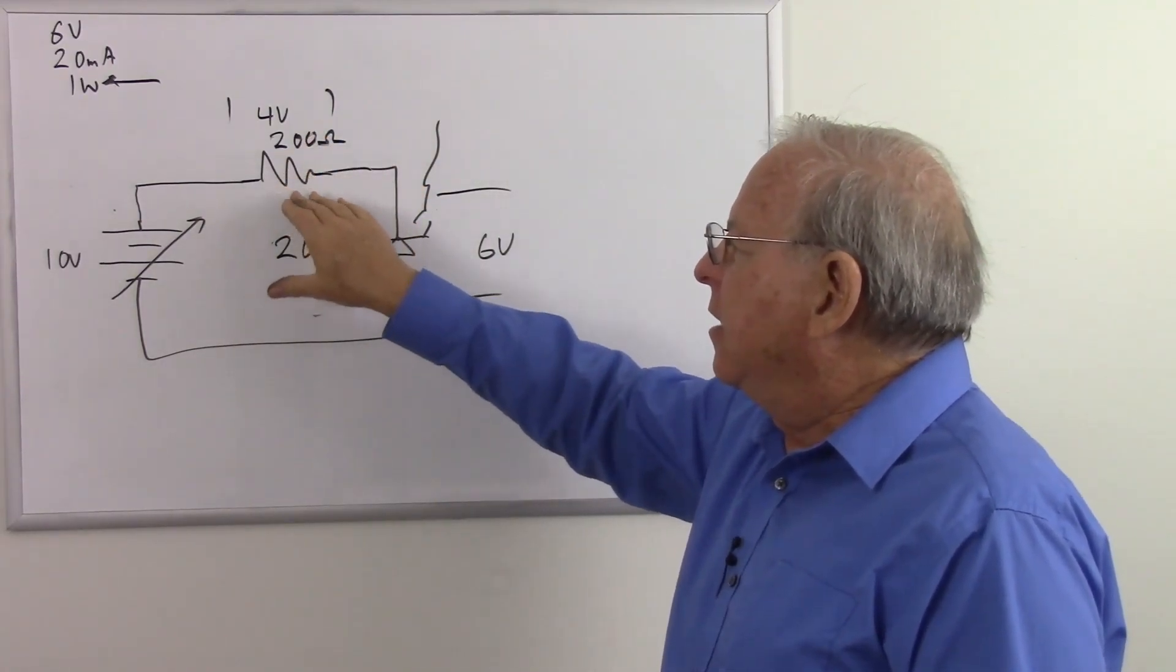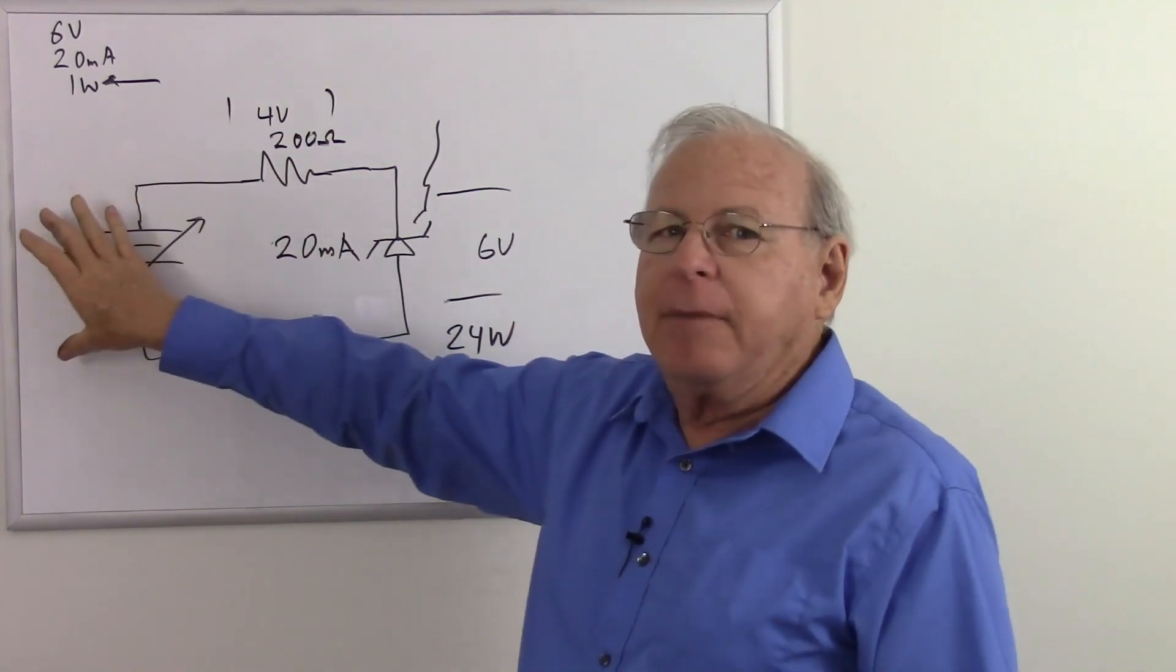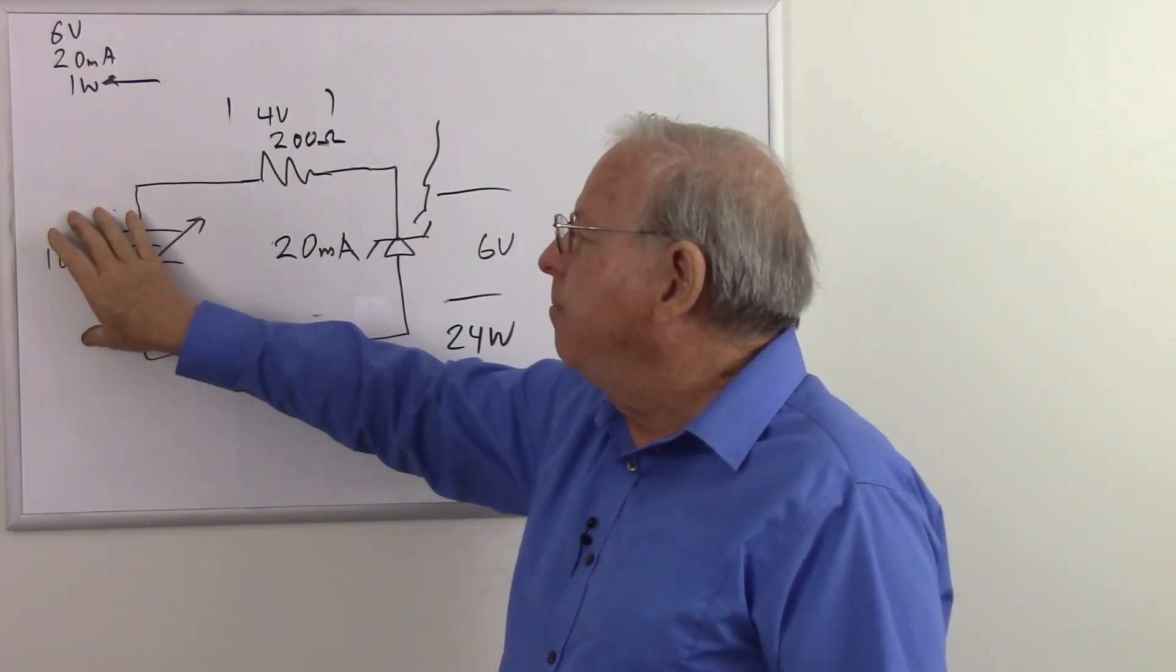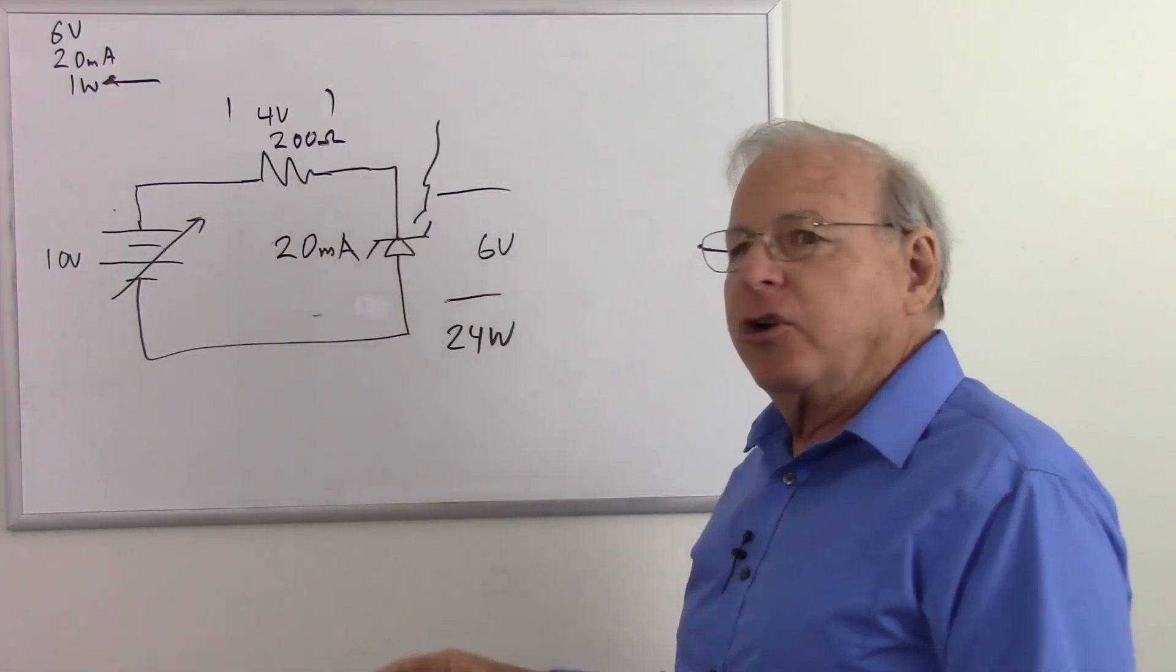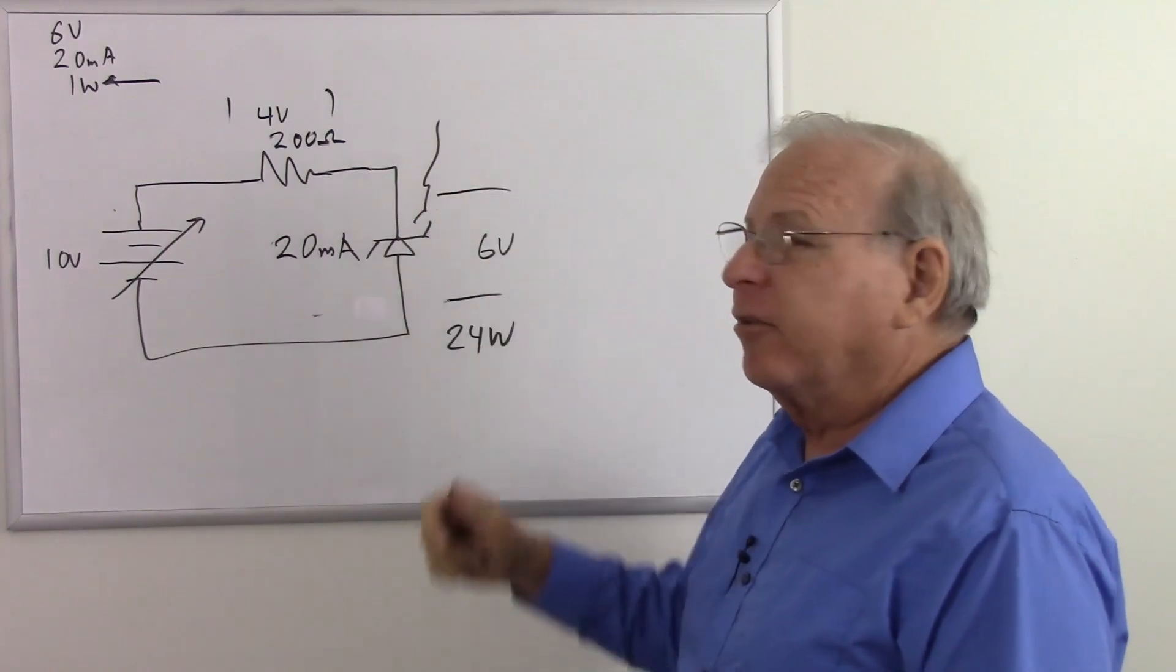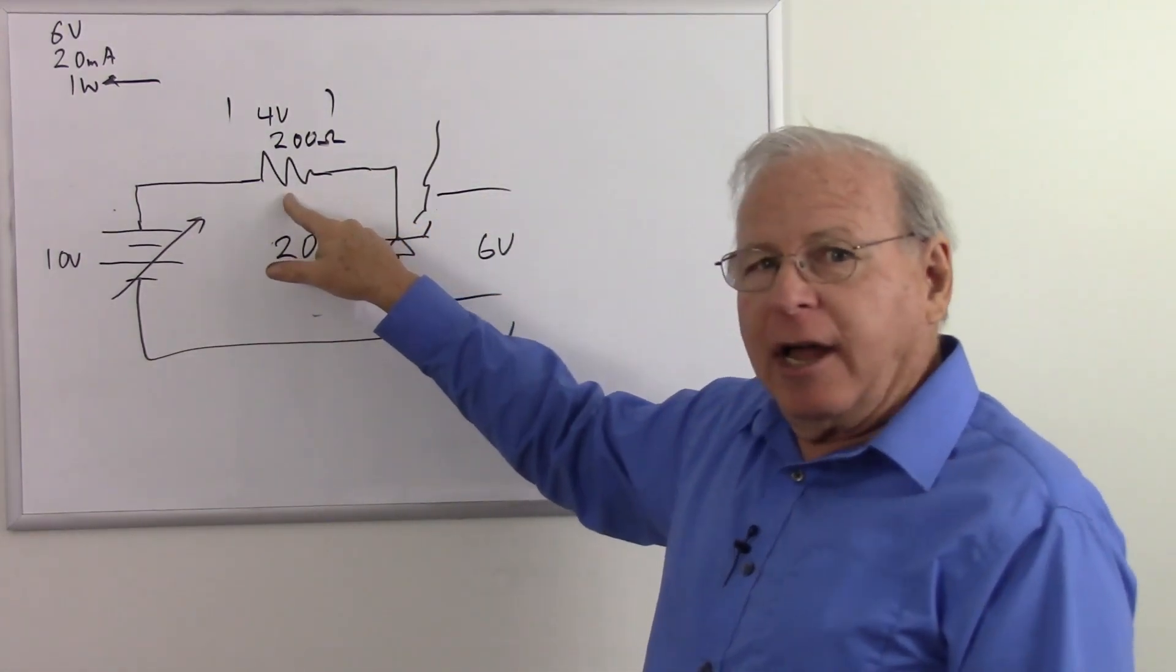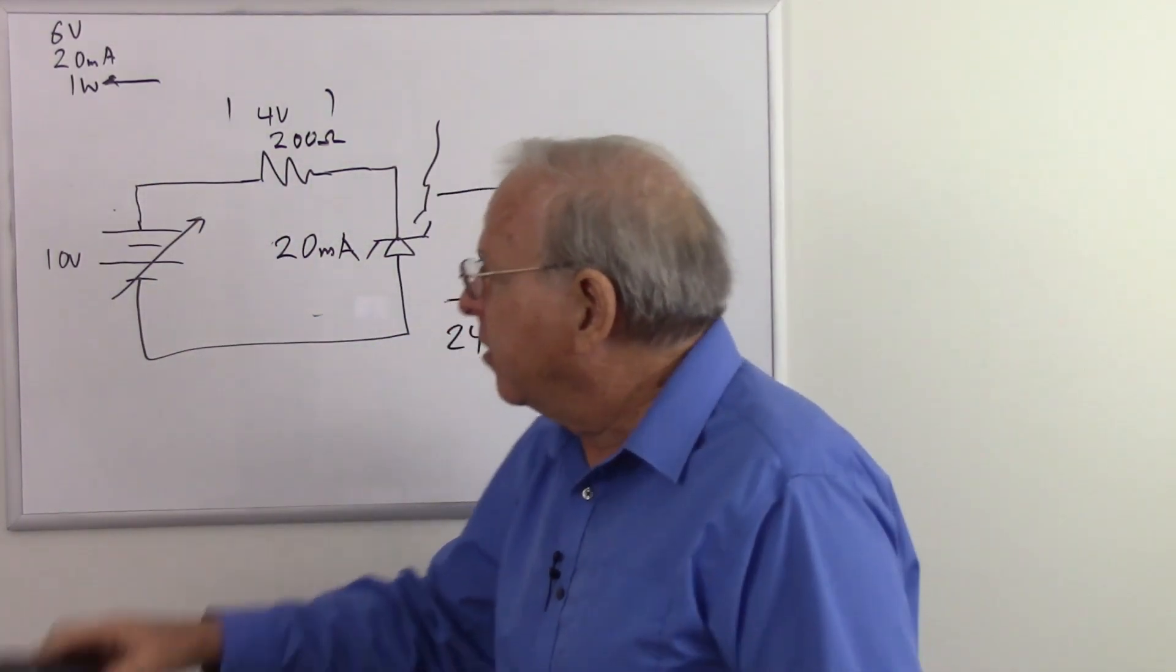So that's why we need this resistor, because we need to isolate the Zener diode from the power source, because it almost certainly has too low of an impedance for the diode, because it's going to allow too much current to flow through it, and we're going to let the smoke out. So actually, we do not need this if we are coming from a source that has a high enough internal resistance.